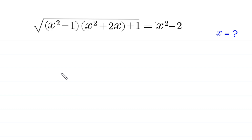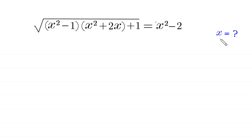Hello, welcome to how to solve this very nice radical equation. The equation is: square root of (x squared minus 1) times (x squared plus 2x plus 1) is equal to x squared minus 2. We need to find all possible values of x. So let's start.